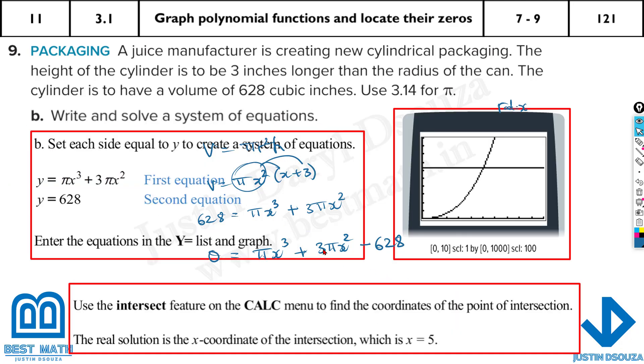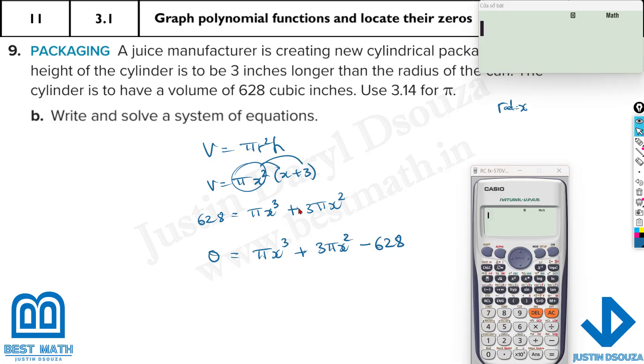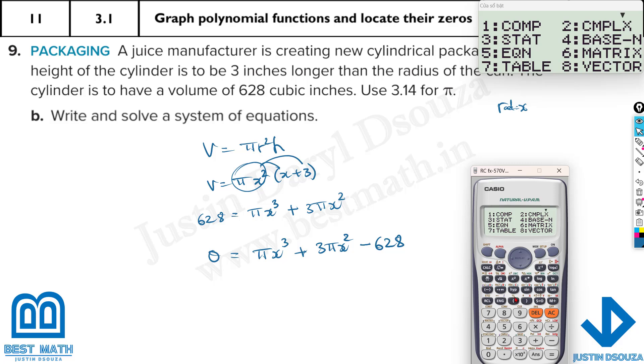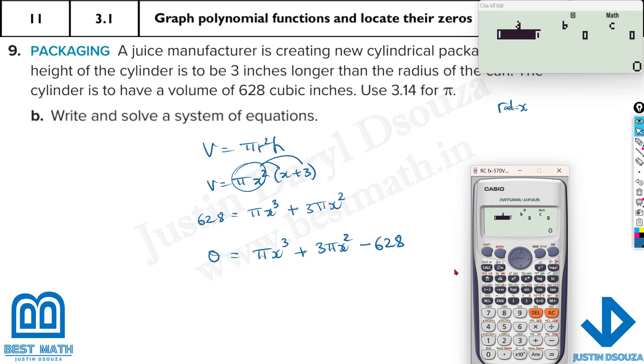But we will have to solve this by calculator. Now we can see the highest degree is power 3, it's cubic. Mode 5 and it is 4. So what is π? Just type π, it's 3.14. It'll automatically consider that value, but they have already told use 3.14. What about here? It is 3 multiplied by 3.14, it's 3π before x². Now there is no x term, so here the C is 0, and the last term will be minus 628. And press equal to.